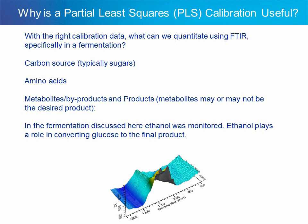With the right calibration data, what can we quantitate using FTIR, specifically in a fermentation? The carbon source, which is typically a sugar such as glucose, maltose, or dextrose. Amino acids, metabolites, byproducts, and products. Alcohols such as ethanol, methanol, and butanol. Ammonia, acetic acid, lactic acid, proteins, and peptides. In the fermentation discussed here, ethanol was monitored. Ethanol plays a role in converting glucose to the final product in this fermentation system.